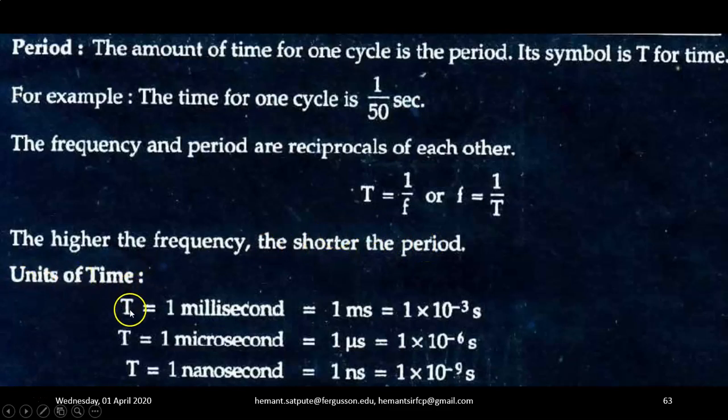Units of time: T = 1 millisecond = 1 ms = 1 × 10⁻³ seconds (milli stands for 10⁻³). 1 microsecond = 1 µs = 1 × 10⁻⁶ seconds (micro stands for 10⁻⁶). 1 nanosecond = 1 ns = 1 × 10⁻⁹ seconds.